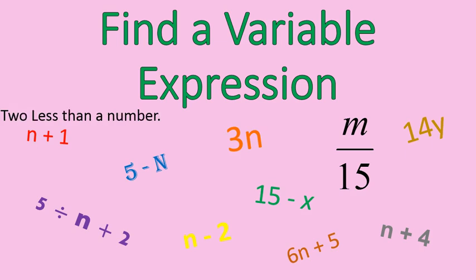Let's try another one: two less than a number. There it is — this is n minus two. It's two less than that number. If your number was five, five minus two would be two less than that. It's sort of backwards the way it's written. Sometimes people make the mistake of writing that as two minus n, but if it's two less than a number, you would actually write it as n minus two.